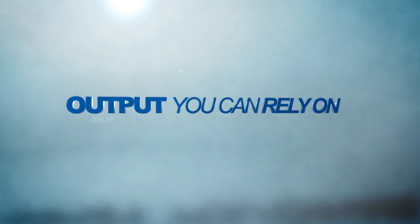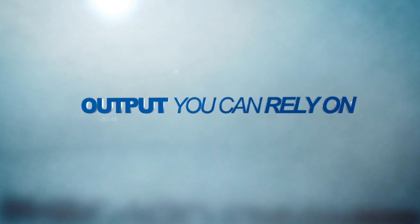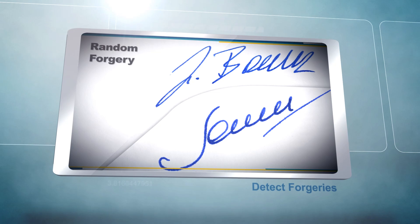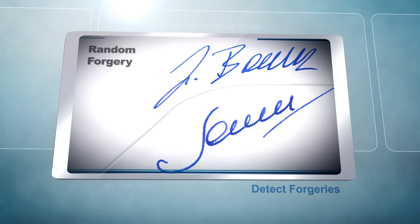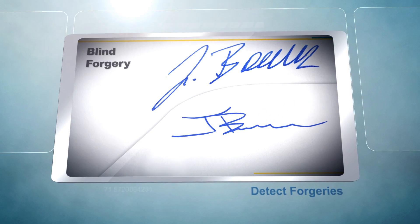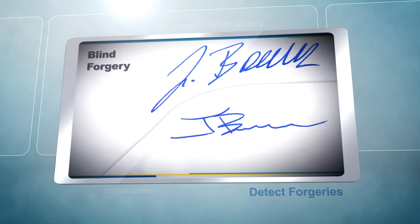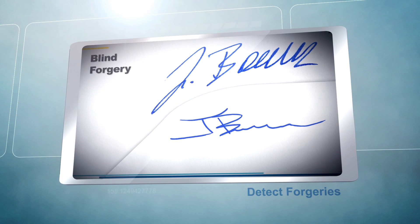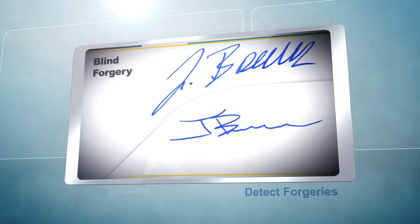Multiple software engines work together to produce a combined output that you can rely on. The results? Random forgeries, forgeries where the signature does not match the name of the authorized signee, and blind forgeries, forgeries using the correct name but incorrect style, are quickly identified and flagged for human review.